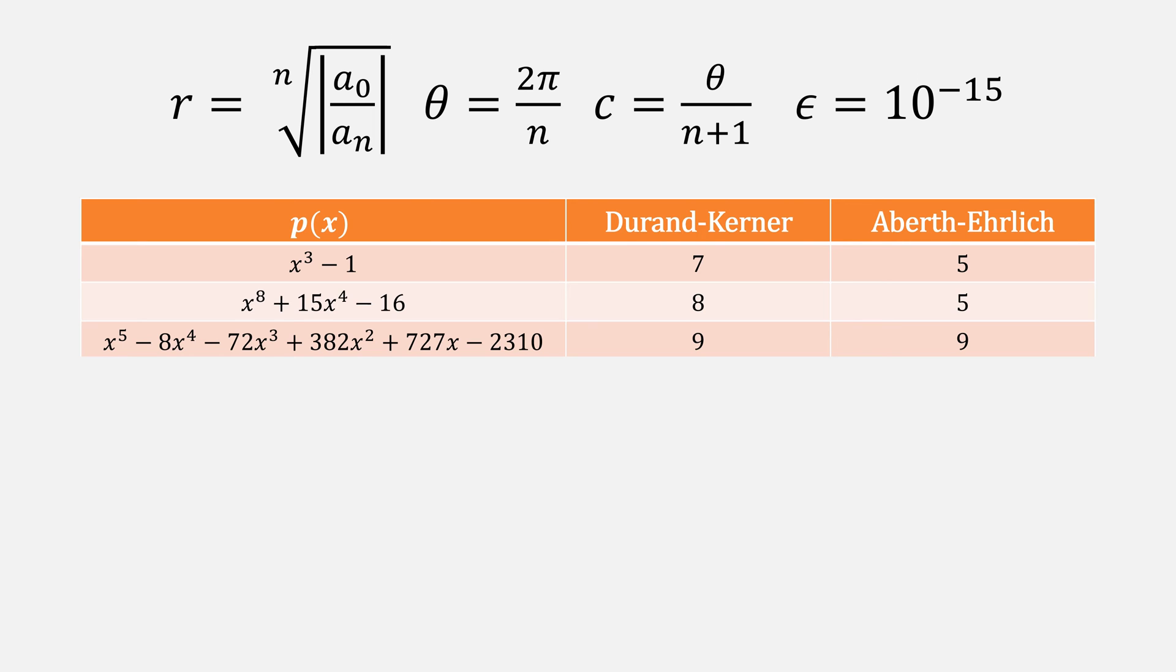This function we solved in my video on Horner's method, and you notice they both took nine iterations to solve it. This was because all of our roots were real, and we're not really gaining anything by starting with complex numbers.